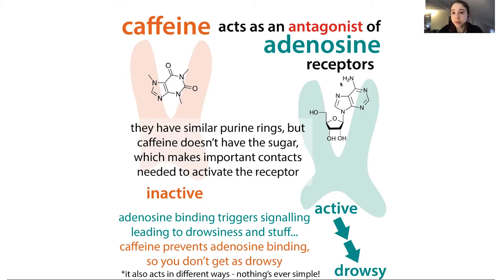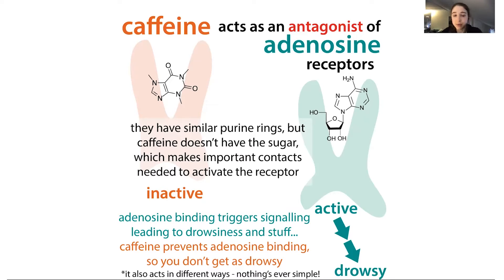Adenosine activates the receptor, so it's an agonist. Caffeine inactivates it, so we call it an antagonist — just like you have a protagonist and an antagonist in a story. The antagonist is kind of ruining the day for the receptor, which in this case is the adenosine receptor.